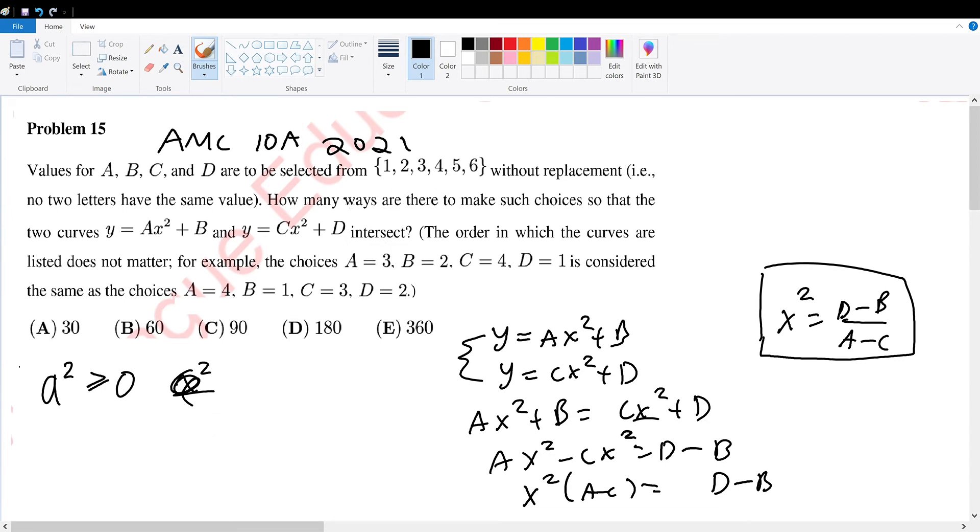Well, we're told that we're supposed to choose a, b, c, d from this range without replacement. Without replacement means after we choose it, we can no longer choose that option. So, therefore, since no value within this set is the same, x squared will never equal zero. So x squared in this case will always be greater than zero.